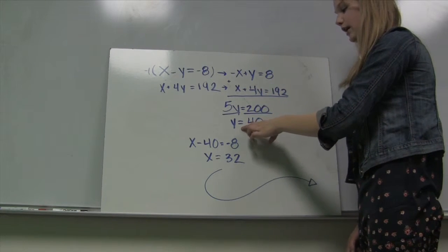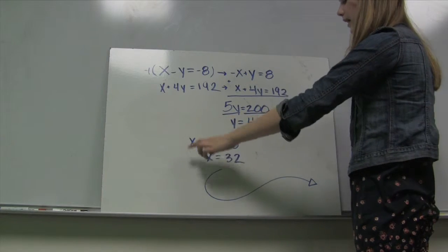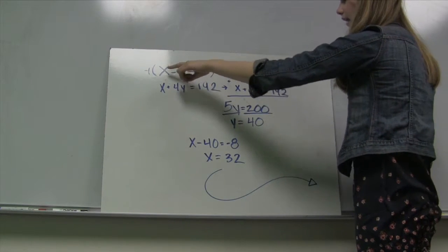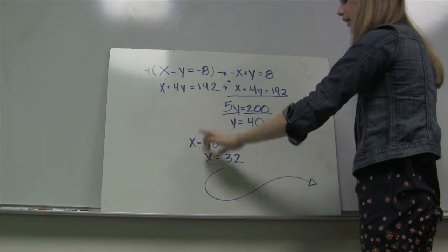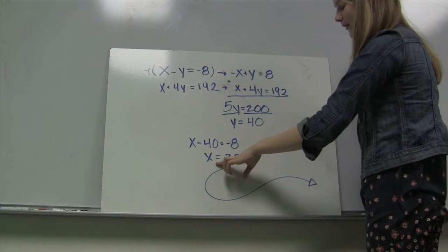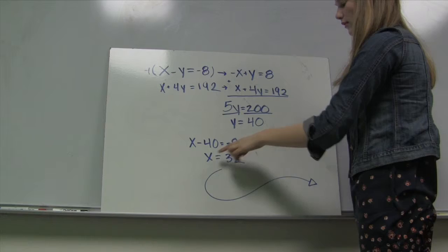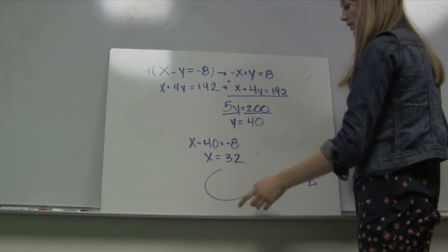And then by dividing 200 by 5 to simplify the equation, you're given y equals 40. And then just by simply plugging in 40 into your equation at the top, x minus y equals negative 8, you can simplify it down to x equals 32. And so there you have y equals 40 and x equals 32.